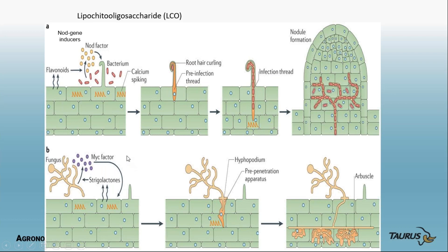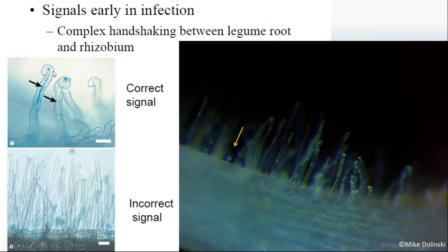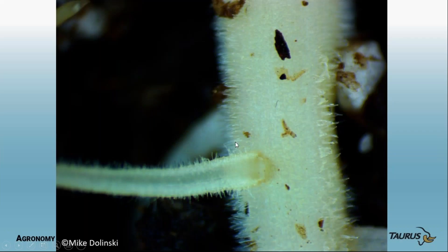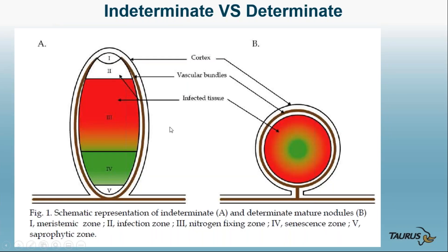With mycorrhizae the process is a little different: the fungus comes along, it has mycofactors and a hormone signal with strigolactones that allow the organism to get into the root, and then it forms arbuscules. Mycorrhizae are ancient — probably 450 million or so years old. Rhizobium are only about 60 million years old and sort of copied the process that mycorrhizae had. There are two kinds of nodules: the typical indeterminate kind found in most of our plants, and the determinate soybean nodule.